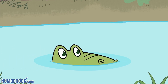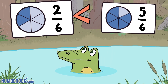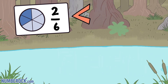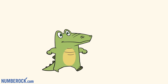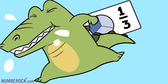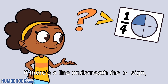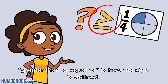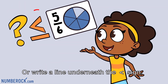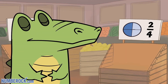The fraction that is greater gets eaten by the alligator. The fraction that is least is never part of his feast. If there's a line underneath the greater than sign, greater than or equal to is how the sign is defined. If I write a line underneath the less than sign, less than or equal to is the name of the design.